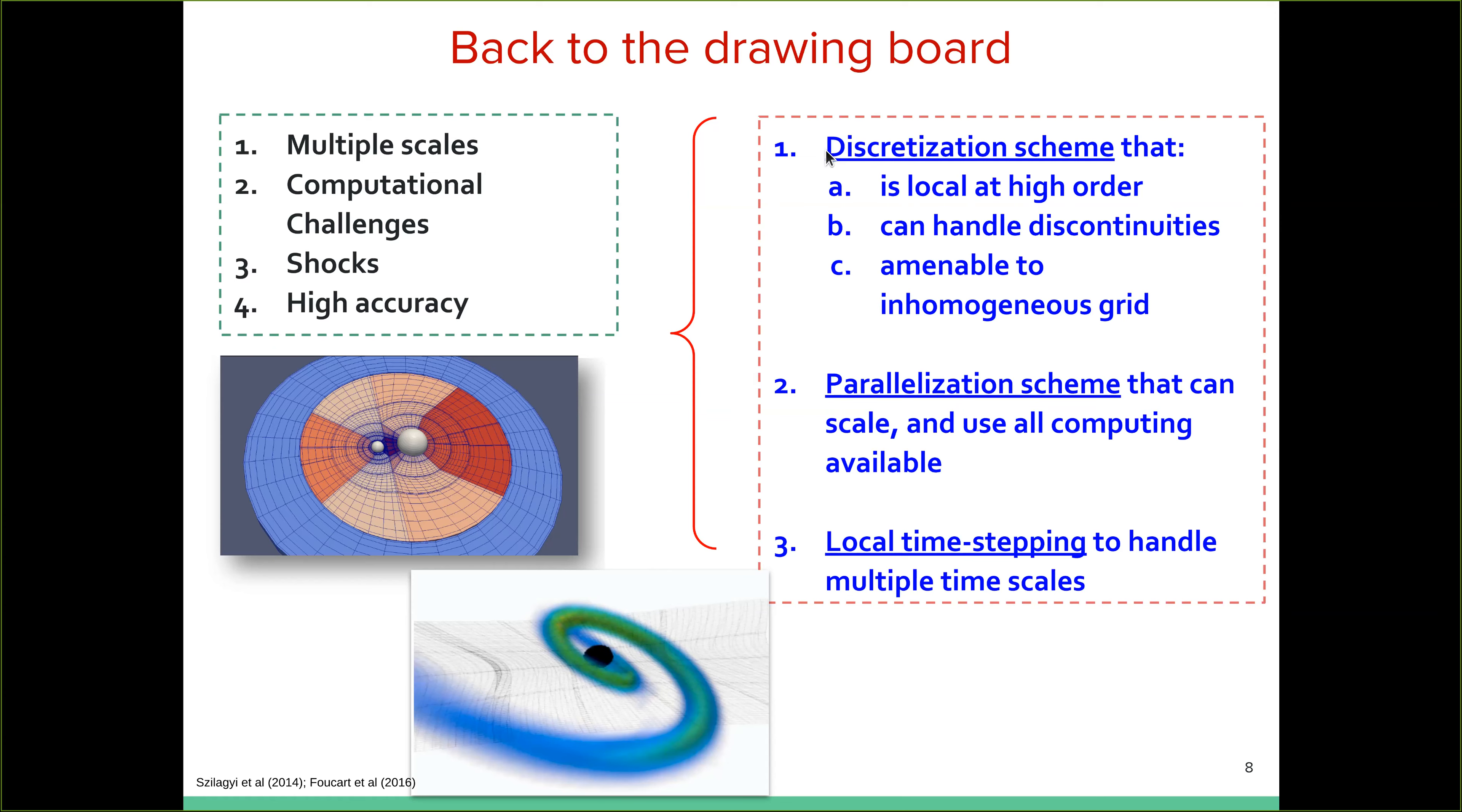Right. The way we discretize the semi-discrete form of our evolution equations. We want the scheme to be local at high order, right? We want that it can handle discontinuities. It can handle shocks well without requiring too many extra grid points or without destroying the accuracy of the solution. And we also want our scheme to be amenable to inhomogeneous grid. So for example, here, I'm showing the typical grid that we use around a two black hole system. And you can see the inhomogeneity of the grid, the grid is much more dense near the smaller black hole and in between the two black holes. Then as compared to the outer wave zone, where not much exciting is really happening there except for the wave propagation, right?